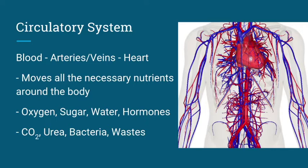Next up we have the circulatory system. It provides blood to all the parts of your body. The circulatory system is made up of the blood, the arteries and veins that contain the blood, and your heart. All of these things work together to move all the nutrients around in your blood to the various body parts. It allows you to take oxygen, sugar, water, and hormones to all your body parts, while also taking away the bad stuff like carbon dioxide, urea, bacteria, and other wastes.